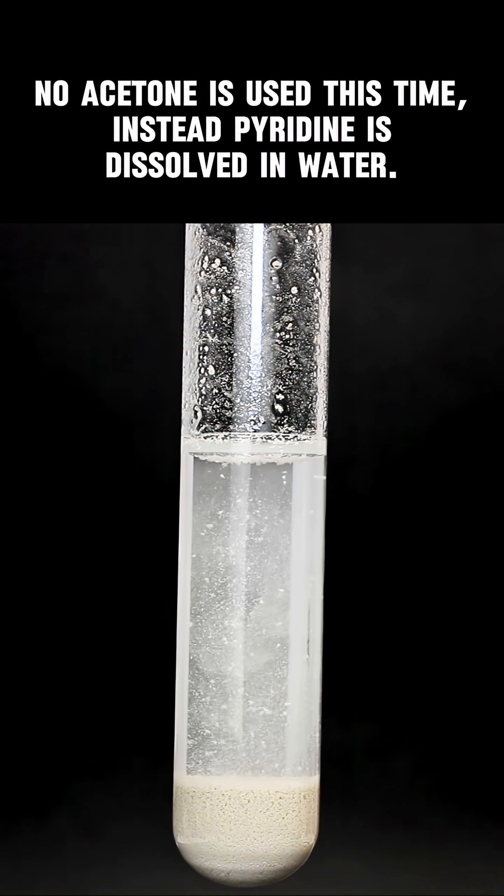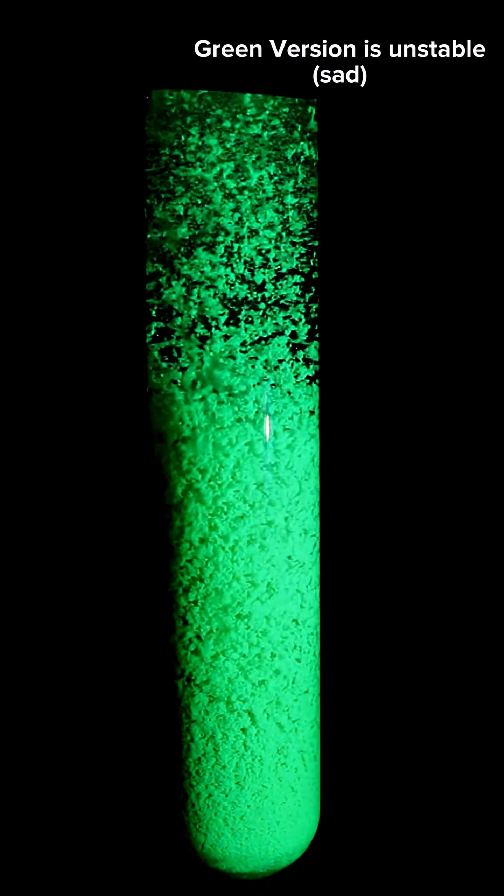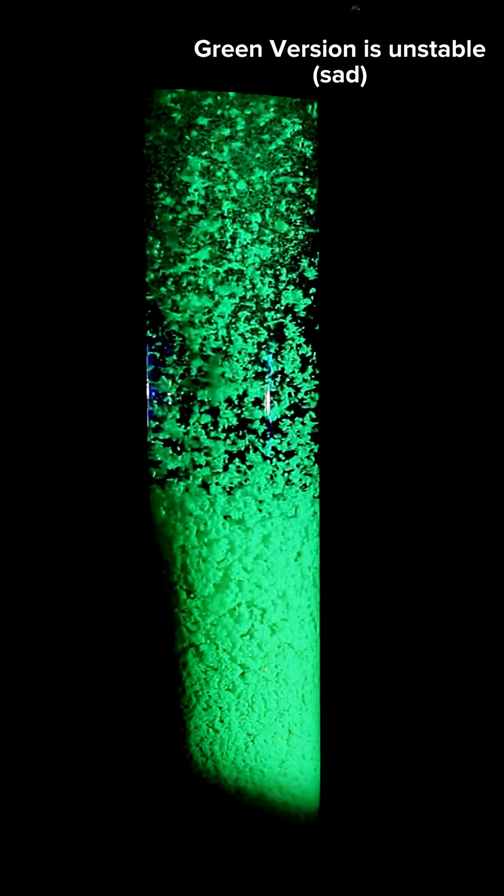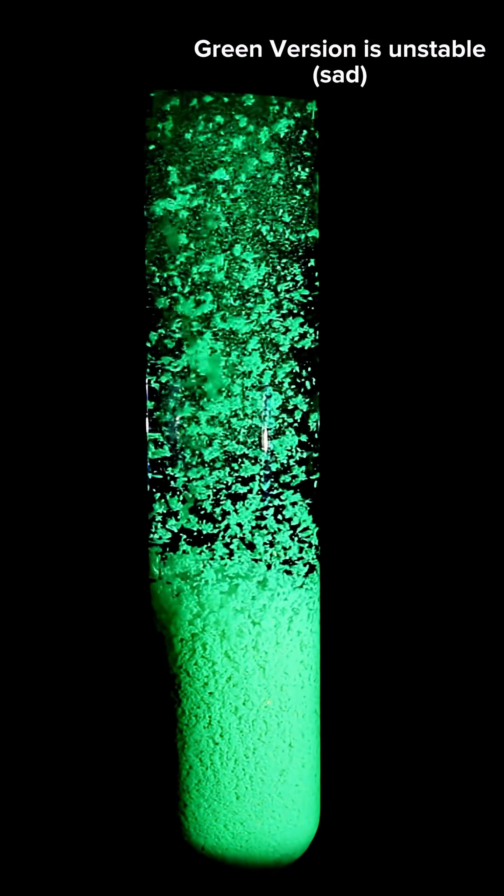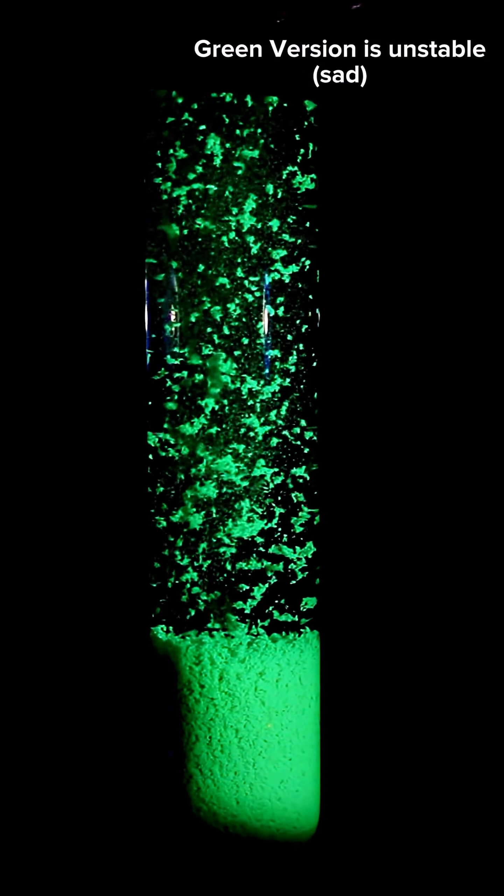I don't really know what this complex would look like as I can't find any literature on it, but as I mentioned earlier it's not really stable. I've had good luck storing it in an ampoule, but otherwise the green variant will slowly lose pyridine and become the yellow variant over time.